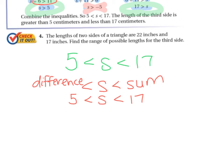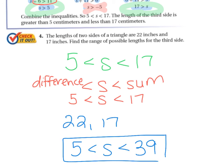For problem 4 with sides 22 inches and 17 inches: the difference is 5, so the third side must be greater than 5; and the sum is 39, so the third side must be less than 39. That wraps up what was covered in class today.